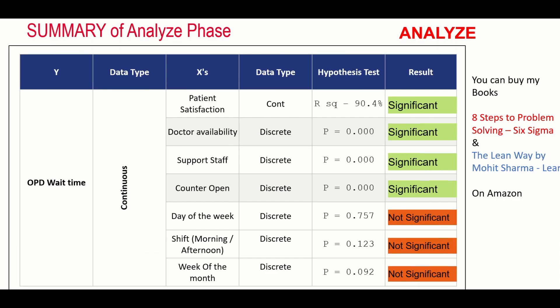Looking at the summary of the analyze phase: OPD wait time is a continuous Y. Patient satisfaction, doctor's availability, support staff, counters open, shift (morning or evening), and week of the month are all X's that were tested. Hypothesis tests were conducted and whether they were significant or non-significant has been listed. Once all of this was complete, the team moved into the improve phase.